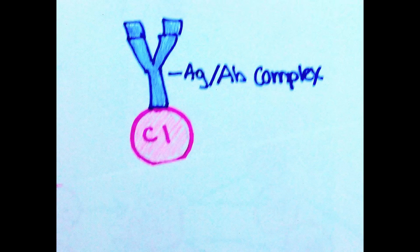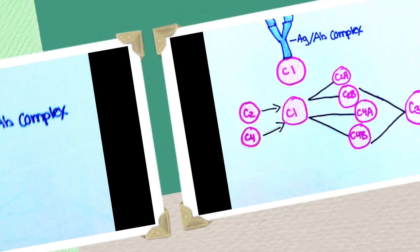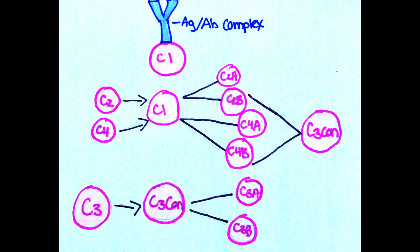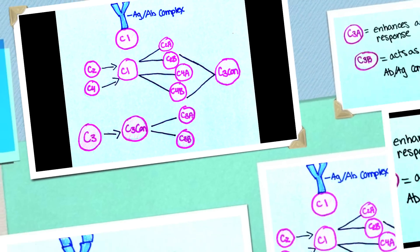C1 attaches itself to the antigen-antibody complex. C2 approaches and C1 splits C2 into C2A and C2B. C4 also approaches C1, which is split into C4A and C4B. C2B and C4B combine to create C3 convertase, an enzyme that splits C3 into C3A and C3B.